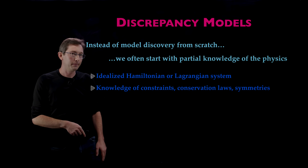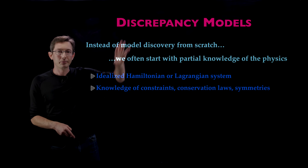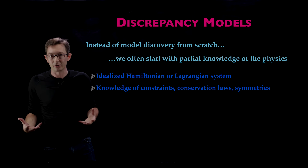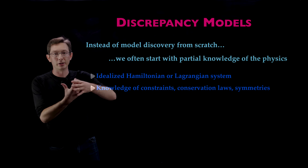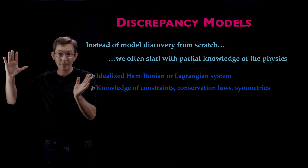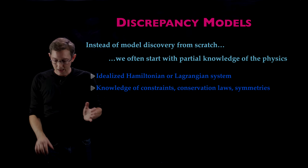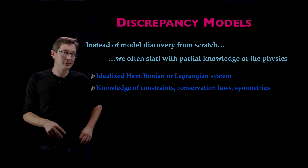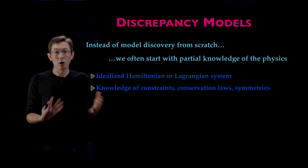We're talking about how to model dynamical systems using modern tools in machine learning. I want to tell you about a really cool perspective called discrepancy modeling. Often when we're trying to use machine learning to learn dynamical systems—learn how a system evolves in time, learn a turbulent fluid system—we do end-to-end learning, acting like we don't know anything and trying to learn everything from scratch.